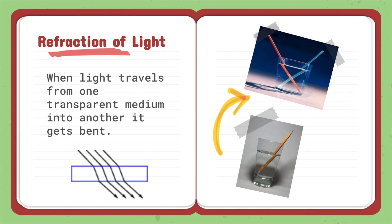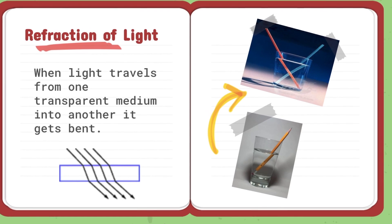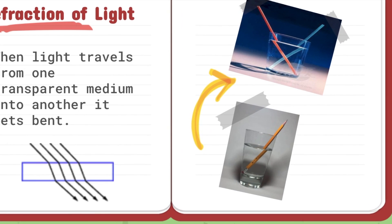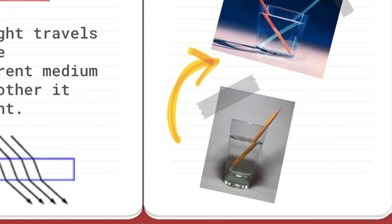Refraction of light. When light travels from one transparent medium into another, it gets bent sometimes. And we call that refraction. So look at the pencil in the cup of water. You can see that it looks bent, but we know that it's not. That is because light has been refracted.